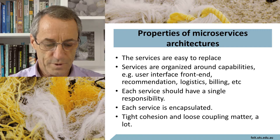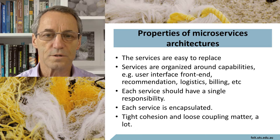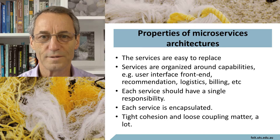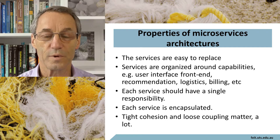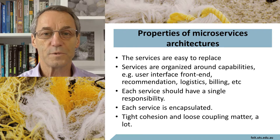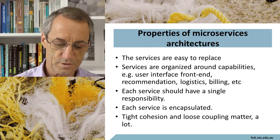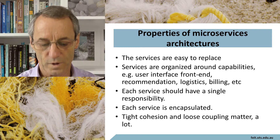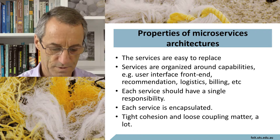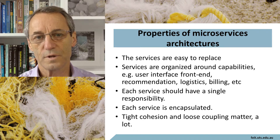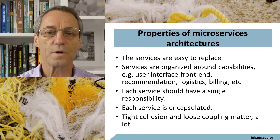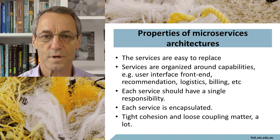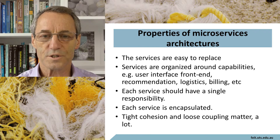The essential properties of microservices architecture: first, each service is easy to replace — the major application can be running and a service can be taken out and plugged back in. Services are organized around capabilities, for example user interface, front-end recommendation, logistics, billing, etc. Each service should have a single responsibility. This comes up time and again throughout the literature on microservices architecture — microservices are small. The measure seems to be that you should be able to develop and deploy one in a week.